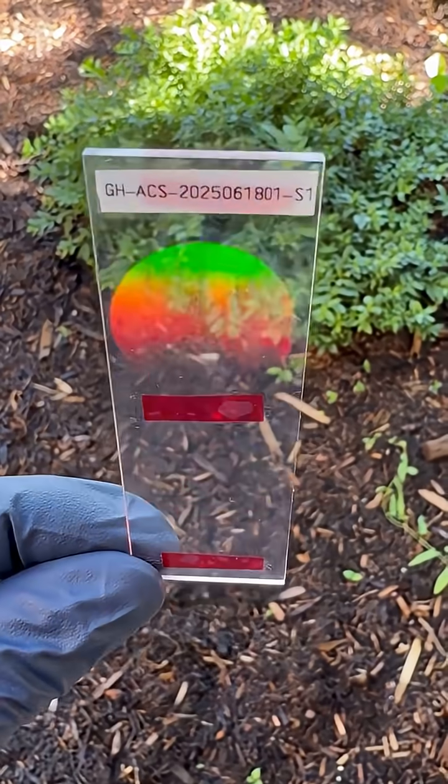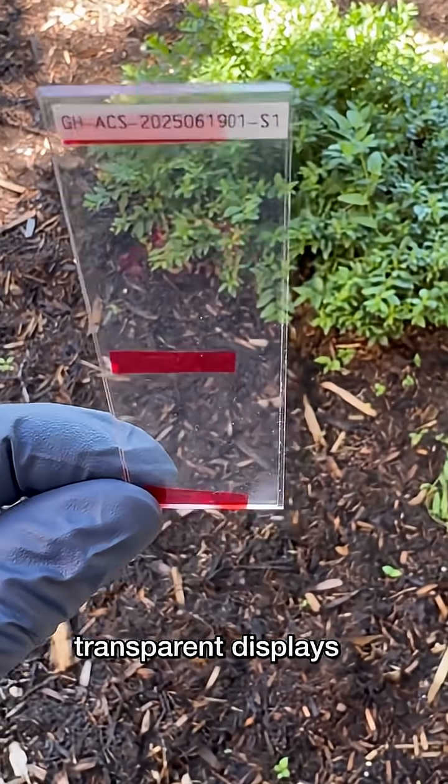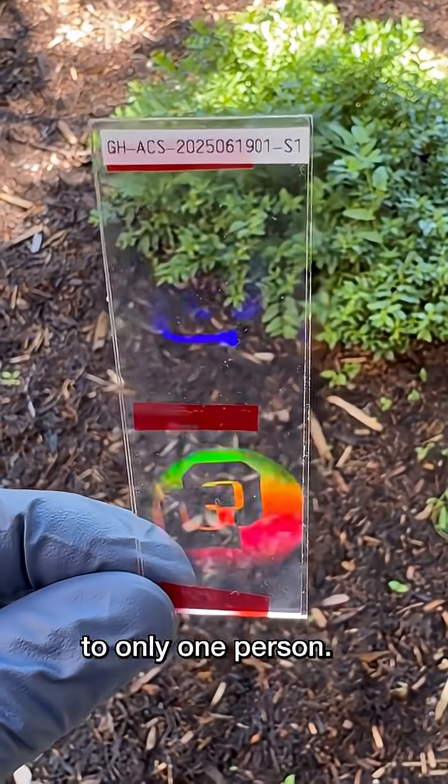Since the colors you see depend on the angle of diffracted light, engineers could use the film to make transparent displays where projected images are visible to only one person.